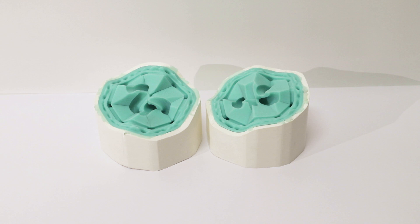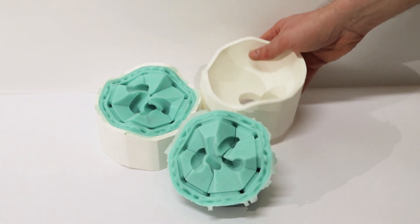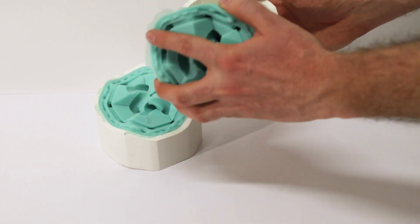Our method allows for the creation of composite two-piece molds. Each mold piece consists of a hard plastic shell and a flexible silicone part.